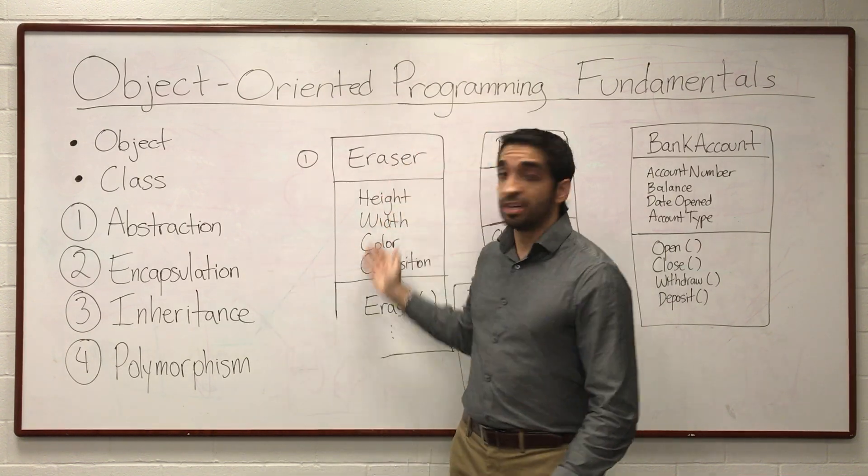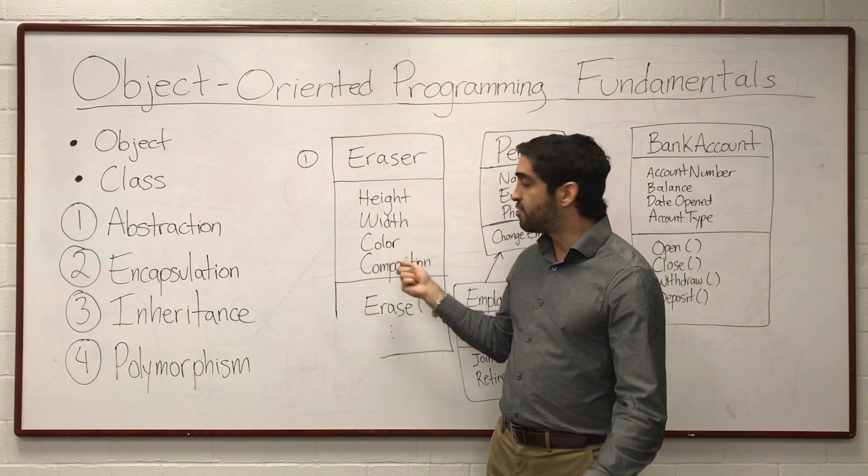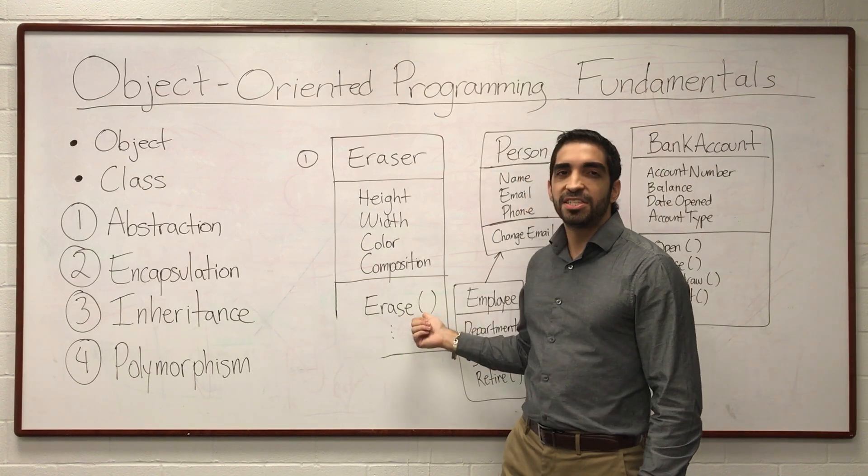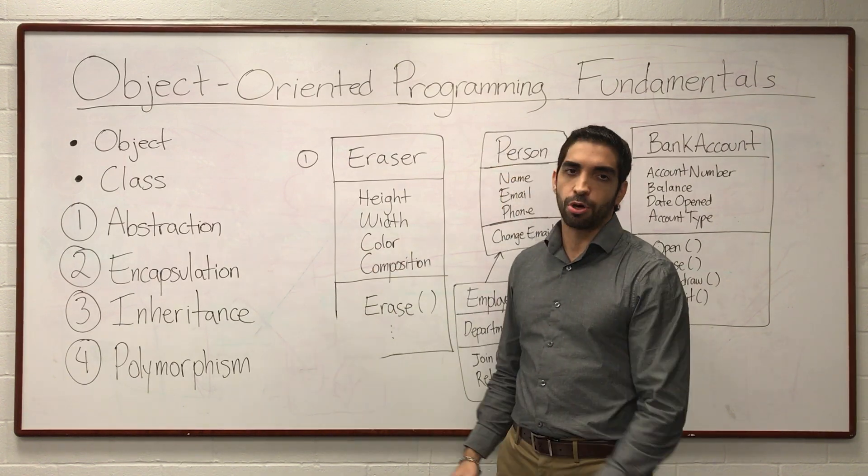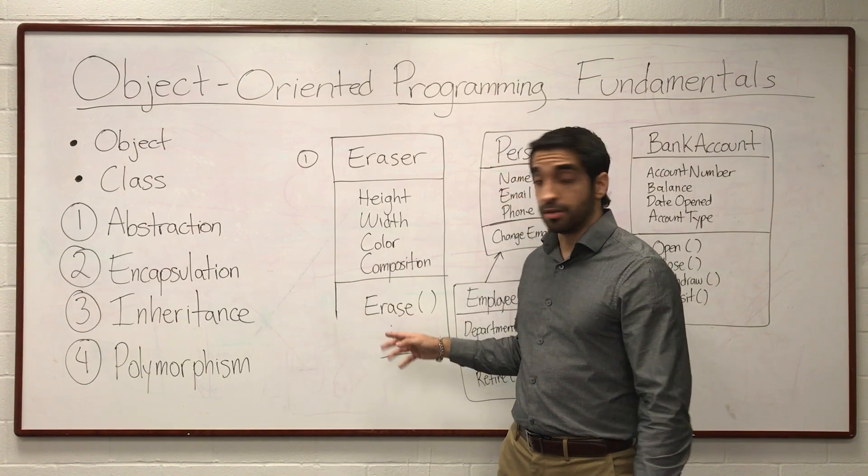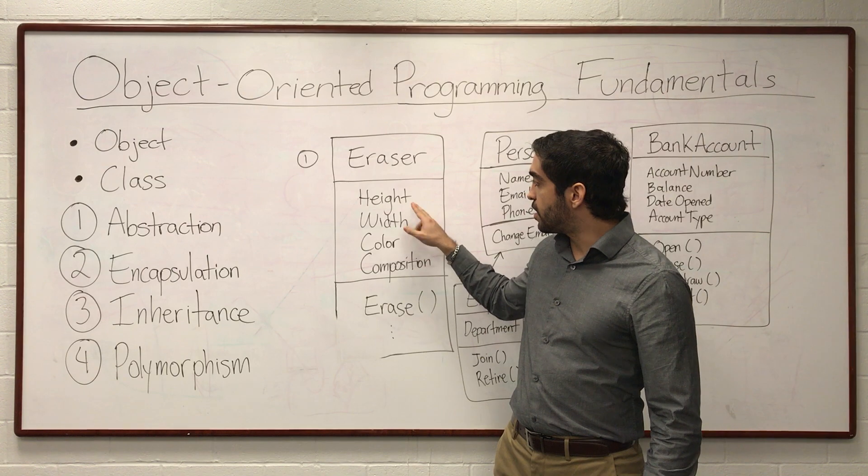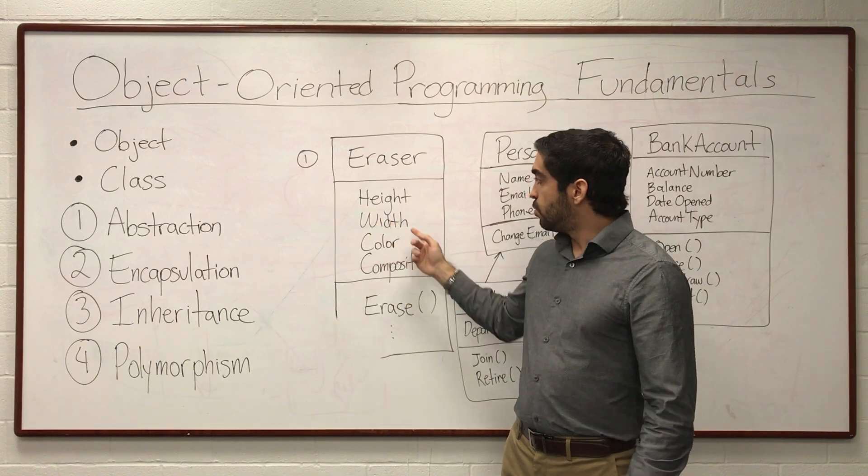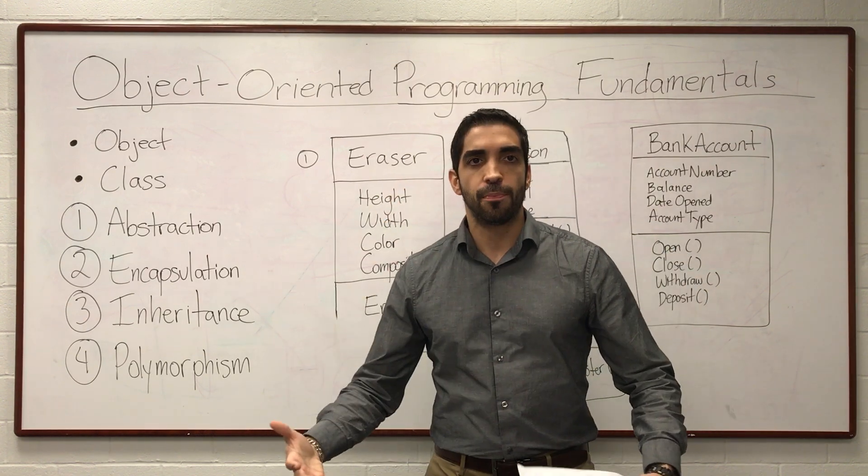For example, I've found here a diagram of an eraser class, the abstract representation. As you see, I wrote down some of the properties and methods: height, width, color, composition, and erase. The parentheses here means it's a method. It's just how we write it, how we distinguish methods from properties. This is the erase method, something that the eraser can do. But I did not assign specific values here. I did not say height equals 5 inches, width equals 2 inches, color equals black.